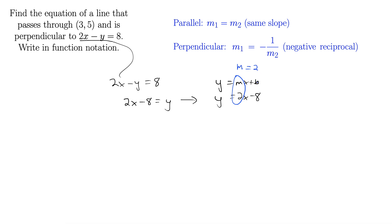But that's the slope of our line. We want the slope of the line perpendicular to that. So the negative reciprocal — m perpendicular — is negative 1 over 2. We flip it and change the sign. We flipped it to 1 half and changed the sign from positive to negative. There's our slope.